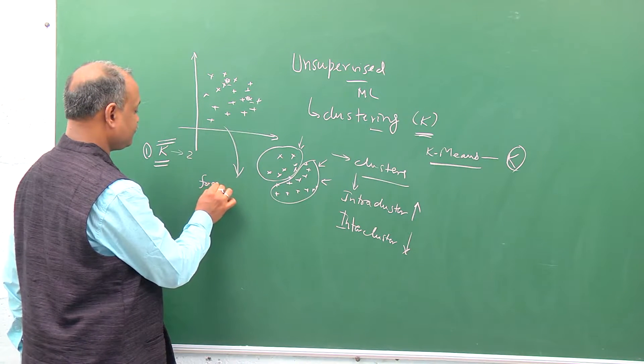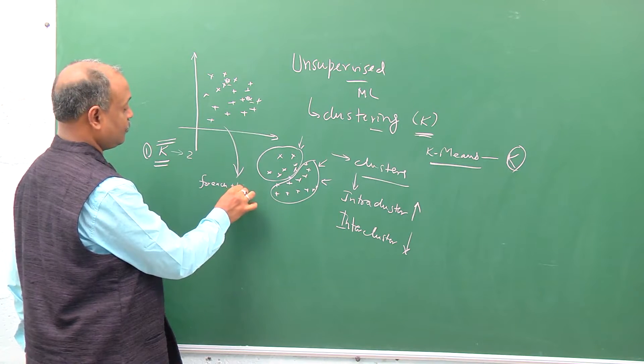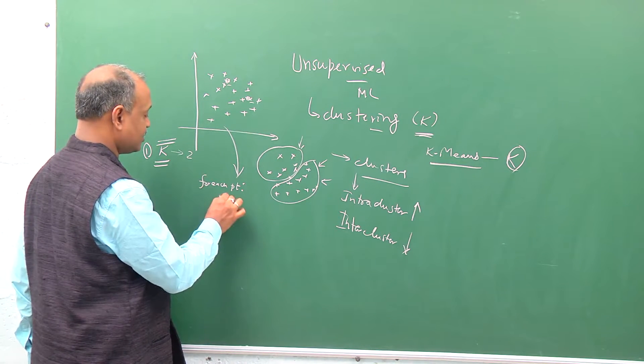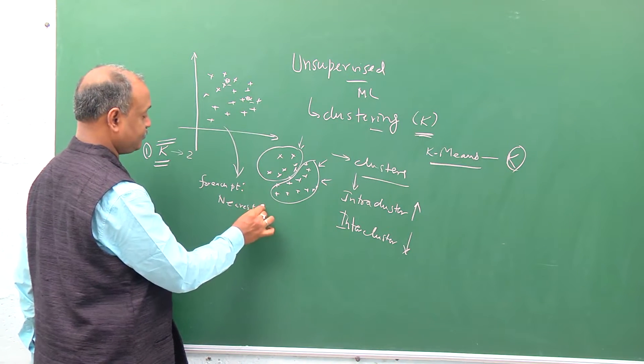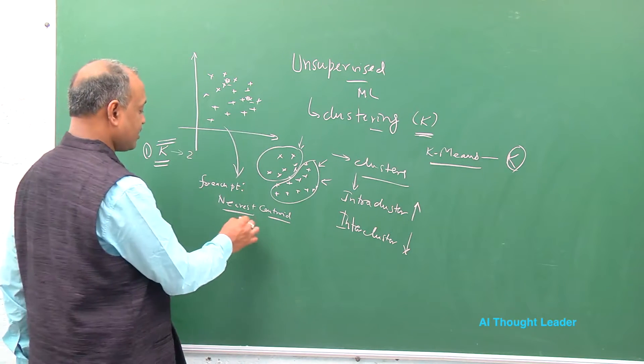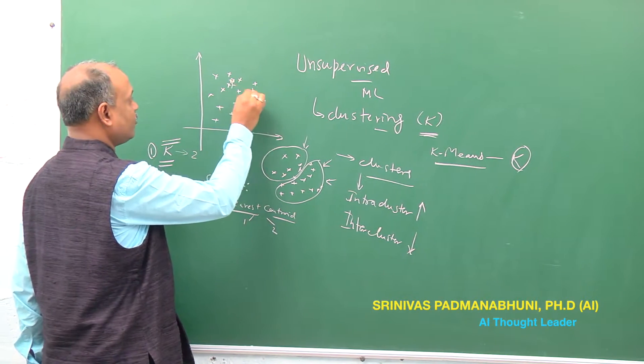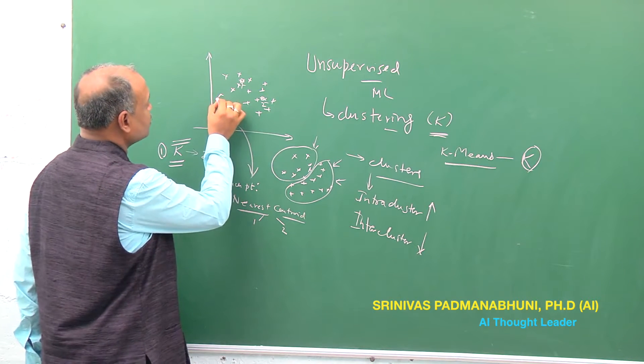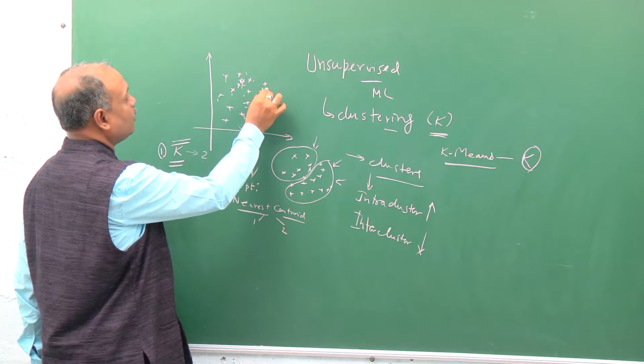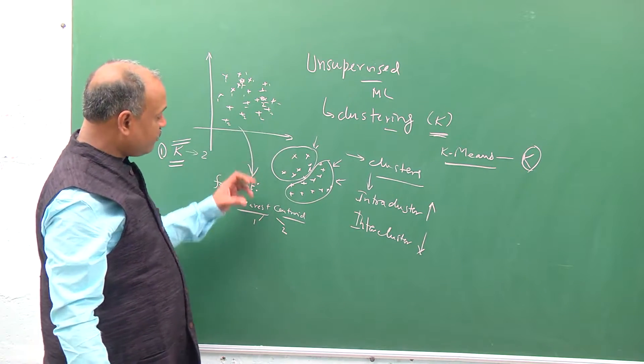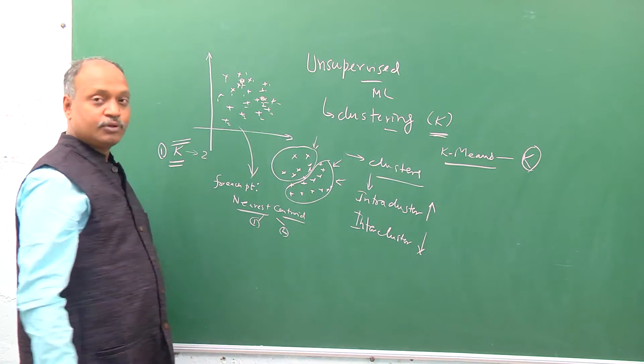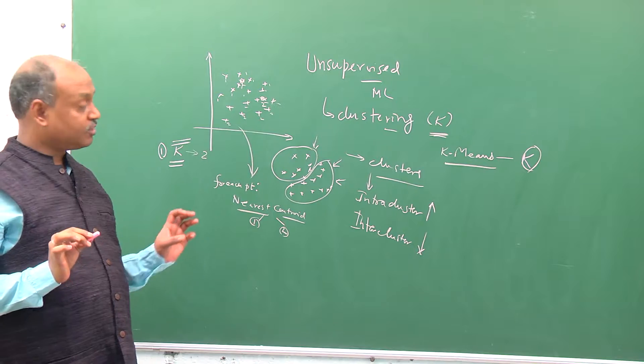Once you have chosen the initial two centroids, for each point you try to find out which is the nearest centroid. Based on that, you give that number one or two. If you call the centroid one, this one is two. At the end of it, all points will have some name: one, one, one, this will probably be two, two, two, and so on. So at the end of this step, all the points in the input will have one of the centroids associated with it.